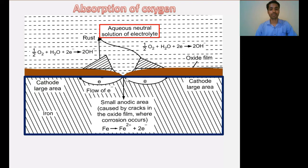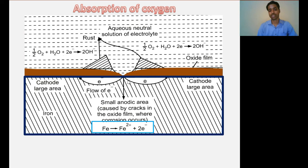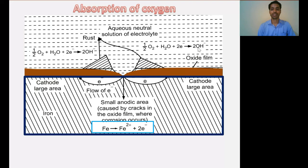On the anodic region, oxidation reaction always takes place — that means metal dissolves into the solution. In this case, iron gives Fe²⁺ ions into the solution by giving 2 electrons. These 2 electrons will be transferred towards the cathodic region through the metal. On the cathode, reduction takes place; metal cannot be further reduced, so dissolved oxygen present in the surrounding electrolyte solution will capture these 2 electrons to give 2 OH⁻ ions. The whole cathodic reaction can be written as: ½O₂ + H₂O + 2e⁻ → 2OH⁻.